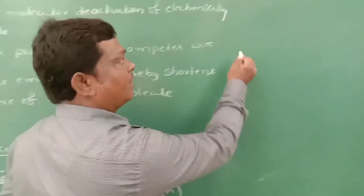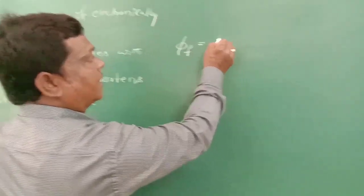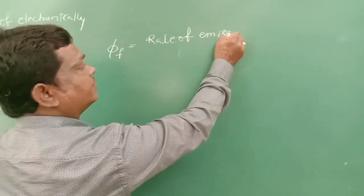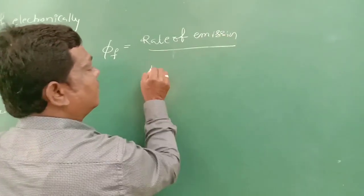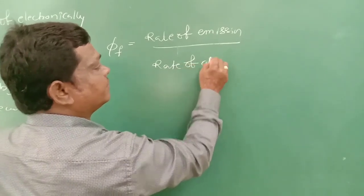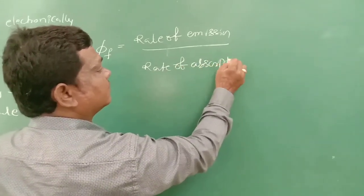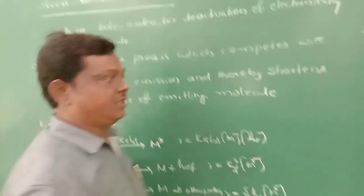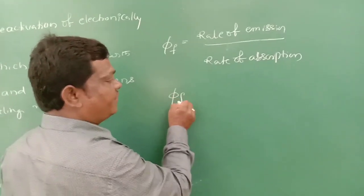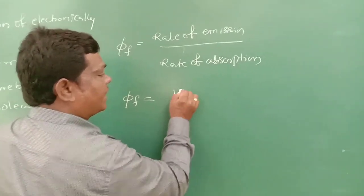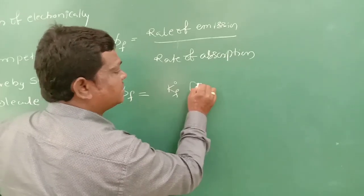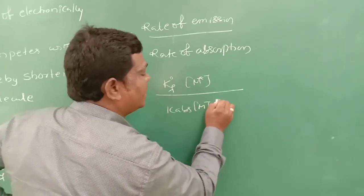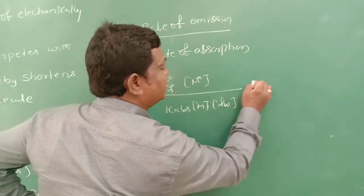According to definition, the quantum yield for fluorescence φF equals the rate of emission divided by the rate of absorption. So φF = K₀F × [M*] divided by K_ABS × [M] × intensity of hν. This is equation 1. The quantum yield for fluorescence depends on the concentration of M*.